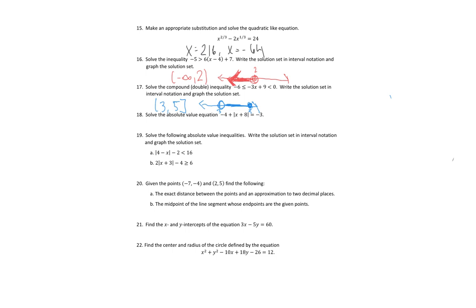Solve the absolute value equation: negative 4 plus absolute value of (x plus 8) equals negative 3. Adding 4 over: absolute value of (x plus 8) equals 1. When we undo the absolute value, we get two versions: x plus 8 equals negative 1 (giving x equals negative 9) and x plus 8 equals positive 1 (giving x equals negative 7). So x equals negative 7 or x equals negative 9.